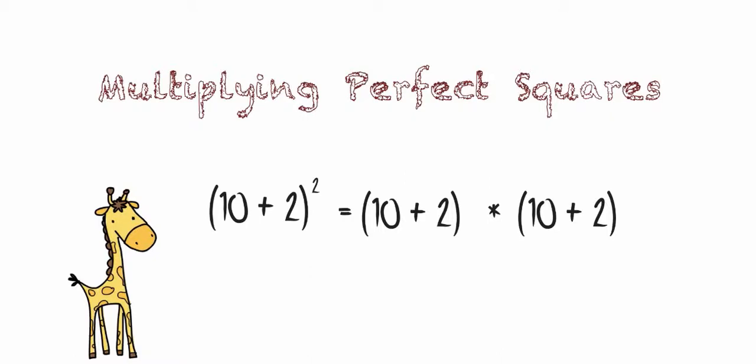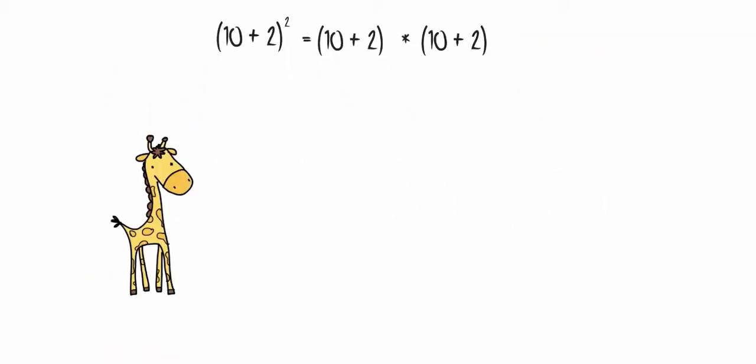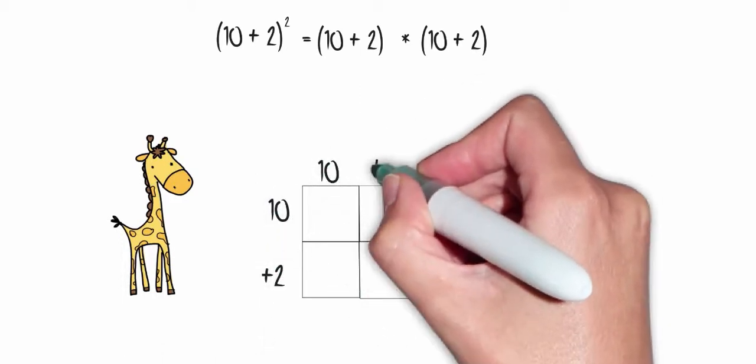Let's solve this using our multiplication array. Some people also call this a box method. So that would be 10 plus 2 on one side of the array and 10 plus 2 on the other.